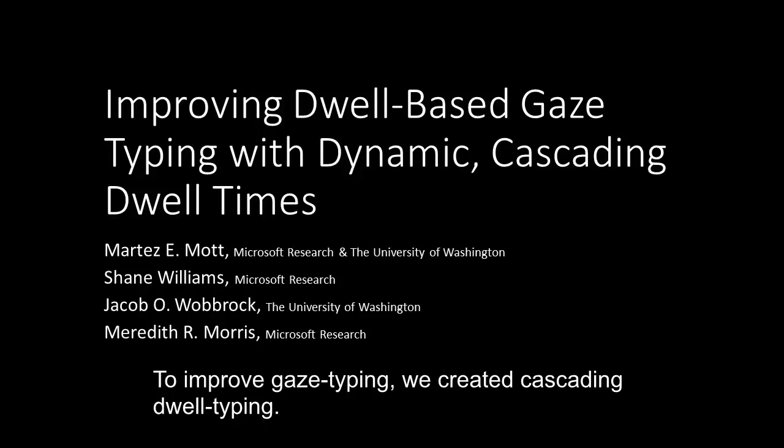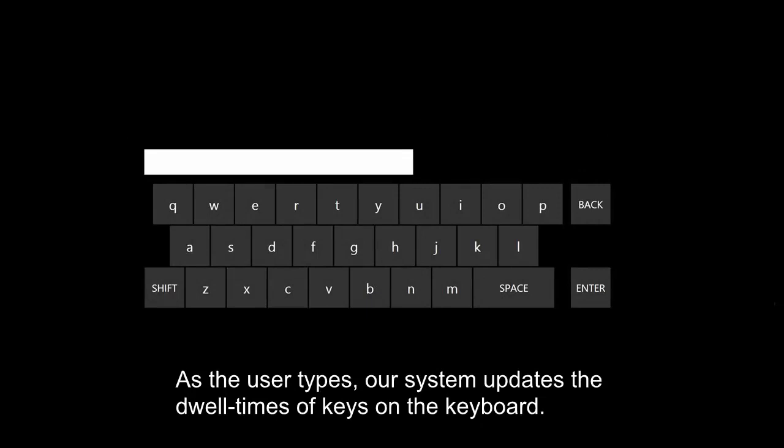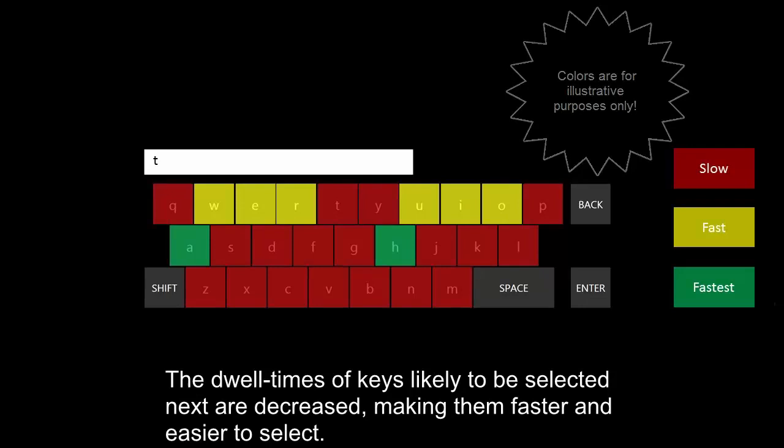To improve gaze typing, we created cascading dwell typing. As the user types, our system updates the dwell times of keys on the keyboard. The dwell times of keys likely to be selected next are decreased, making them faster and easier to select.